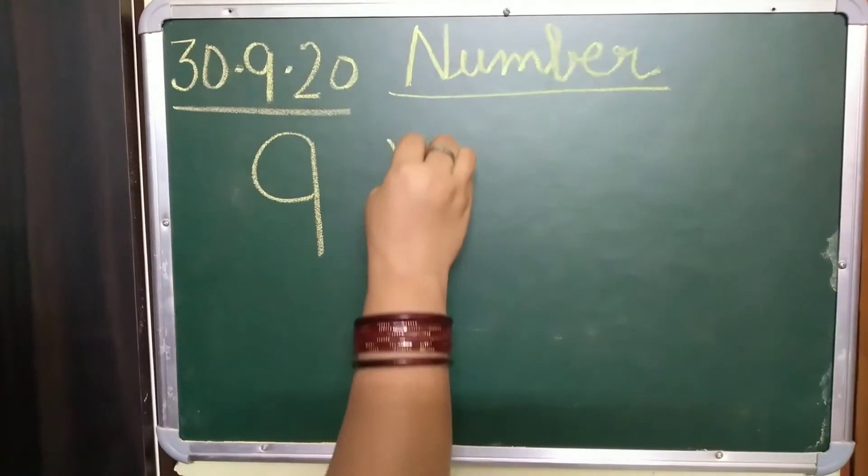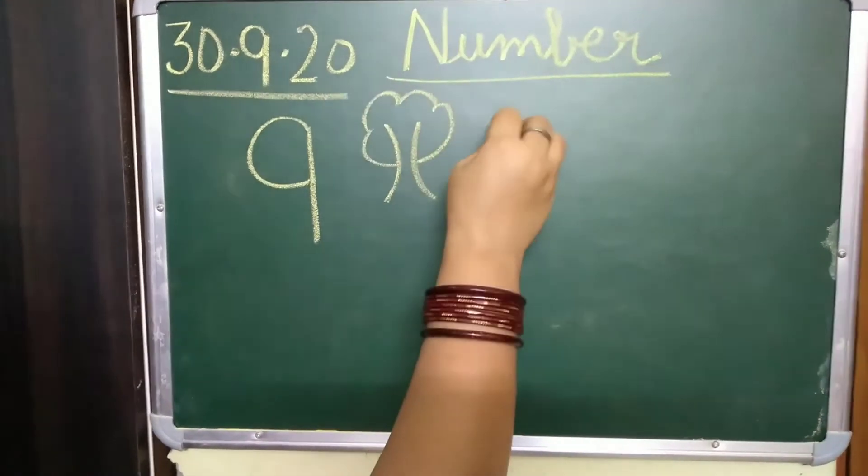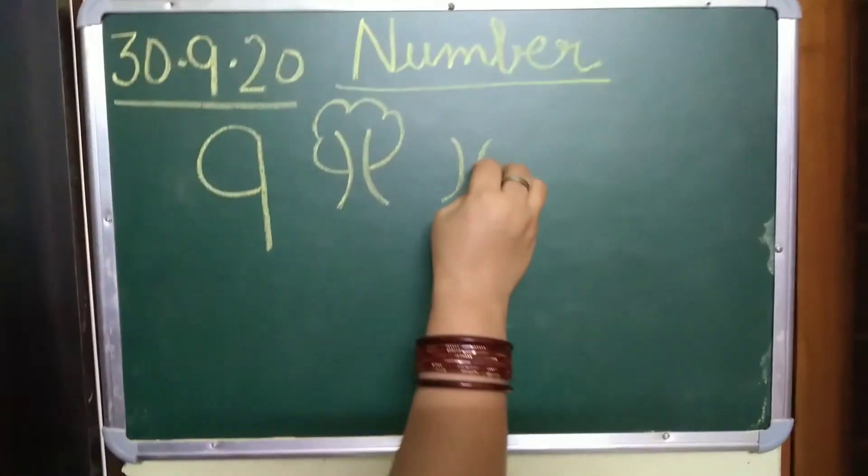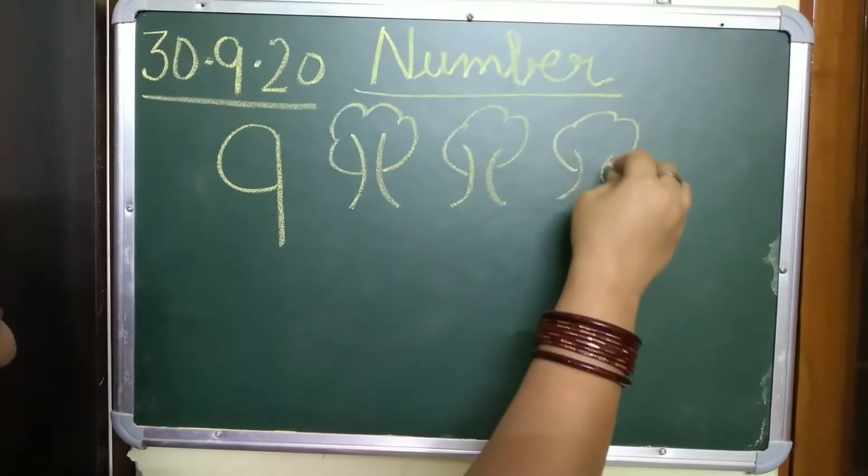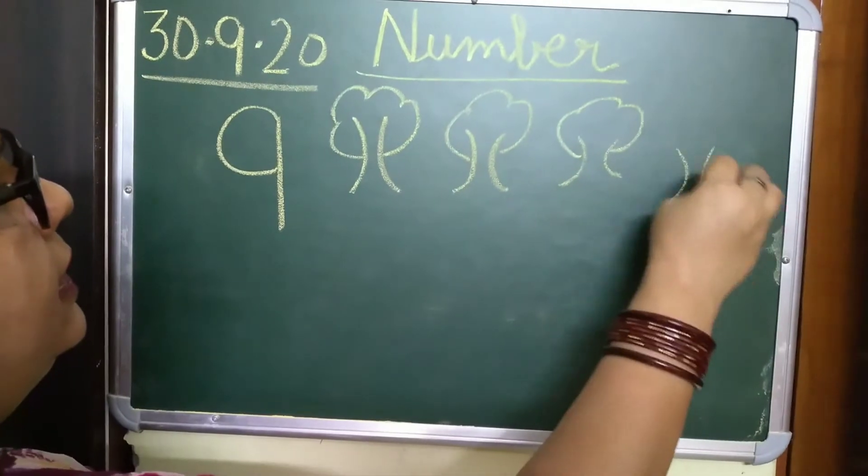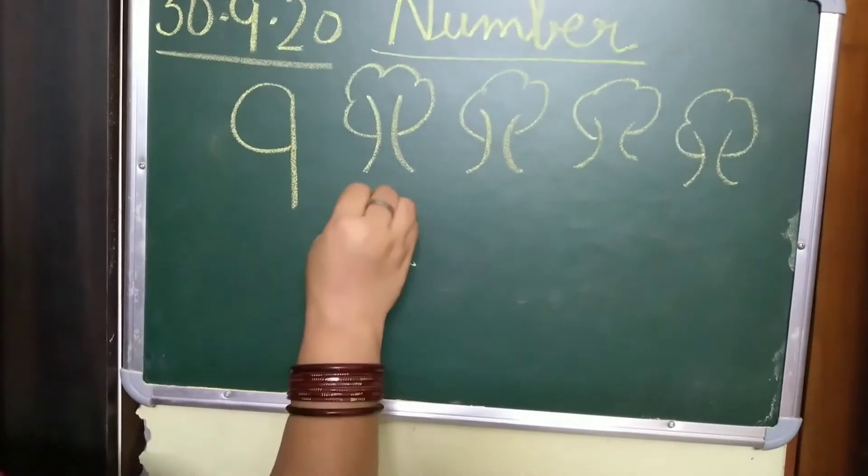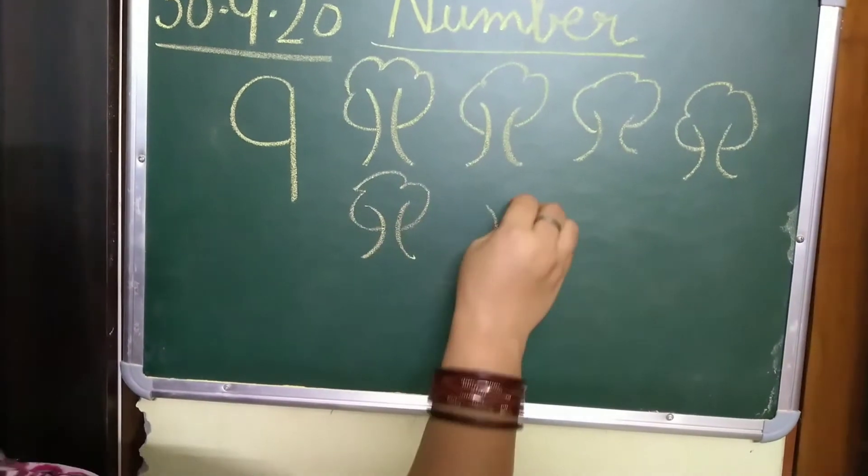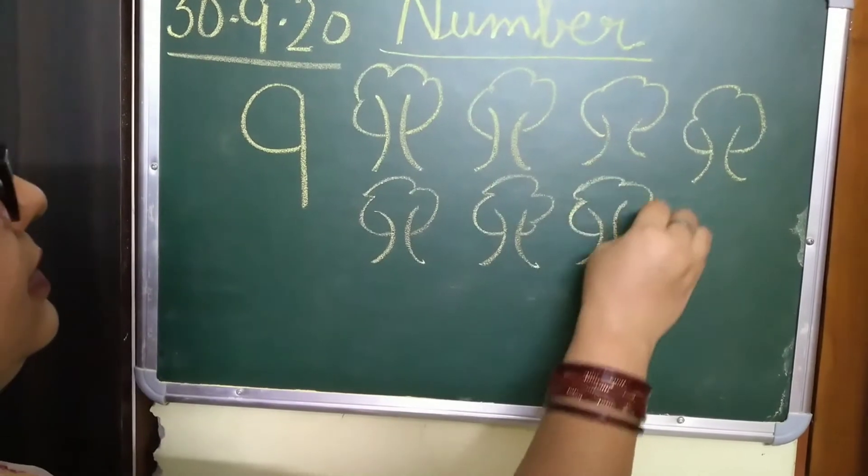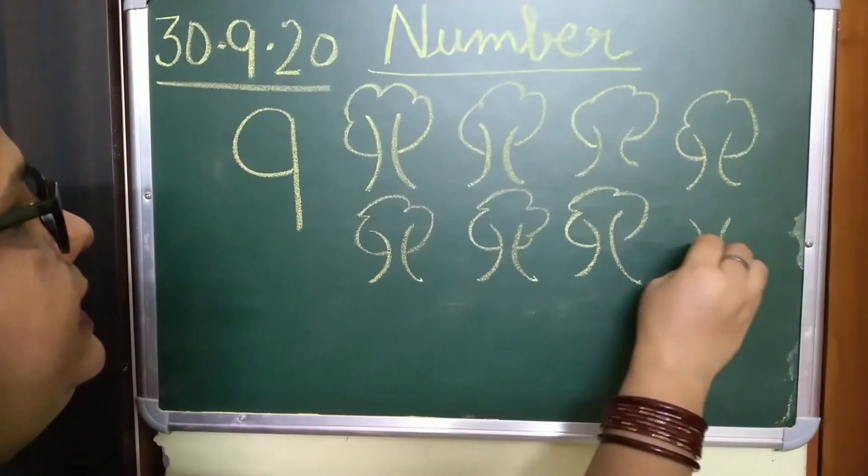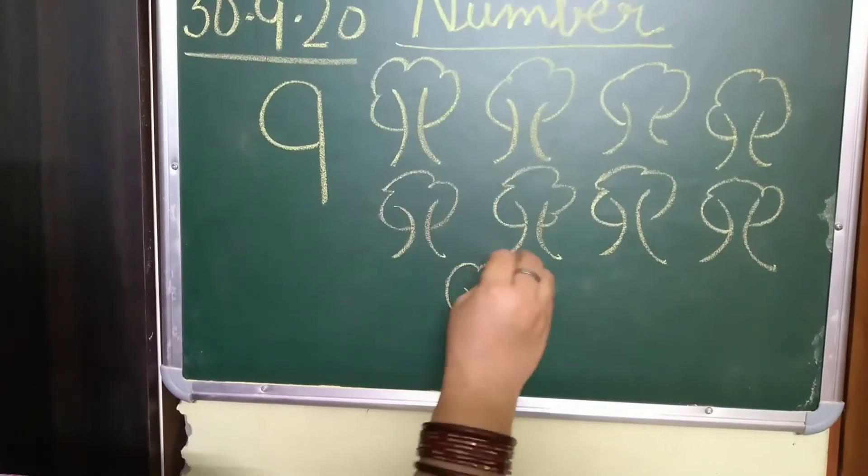So for number 9 we will draw trees. 1, 2, 3, 4, 5, 6, 7, 8 and 9.